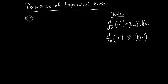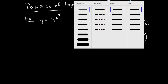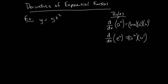We'll start with easy examples and find the first derivative. Let's start with 5 to the x squared. Comparing this to the rules, it's clearly the first rule because the base is just a number — in this case a is 5 — and the exponent is an expression of x where u equals x squared.